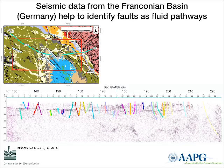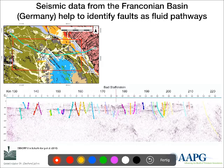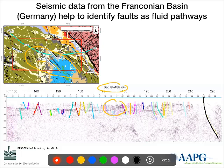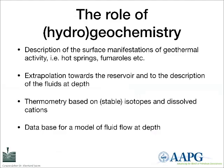Seismic is of course also important, because I was talking about pathways. For the same Franconian Basin area, the temperature anomaly could relate to the Staffelstein Graben structure. We see several faults, including the main Franconian Line, which separates the basement area from the sedimentary basin, plus a number of smaller faults. All these faults could be used as pathways for waters traveling down — cold water down — and hot water up, and so on. Seismic methods allow easy detection of these faults.